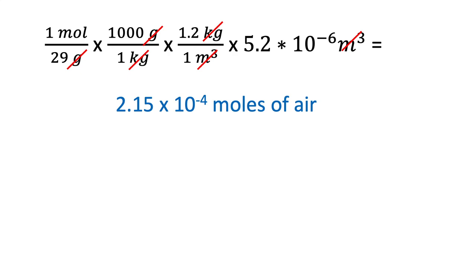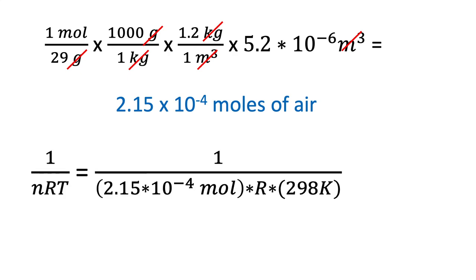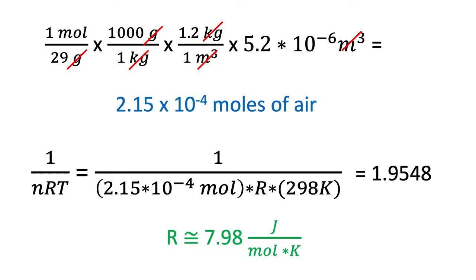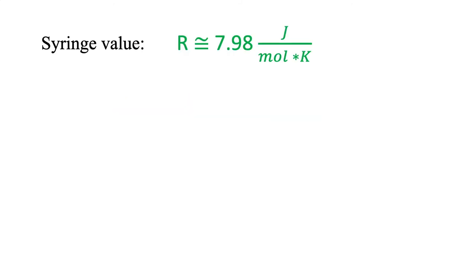Now we can plug in our values for 1 over nRT. Set it equal to the slope of our line. You can find that by just looking at the equation on your graph. And solve for R. We got 7.98 joules per mole kelvin. The accepted value is 8.314 joules per mole kelvin. So our experimental value had only an error of 4%.